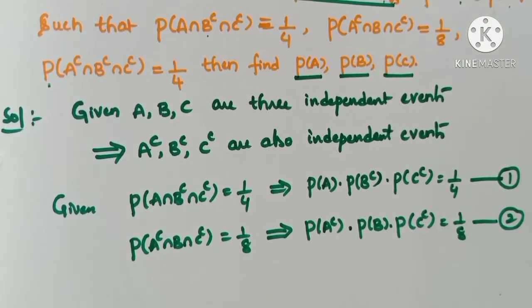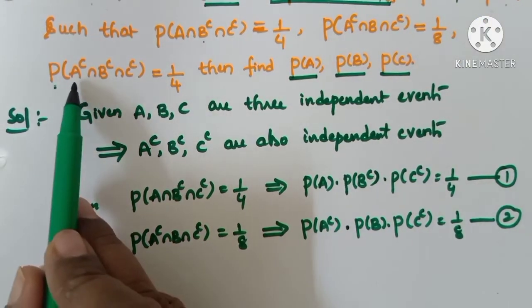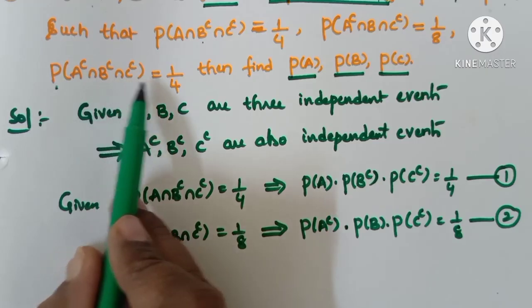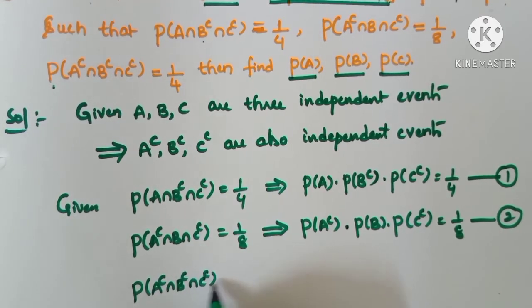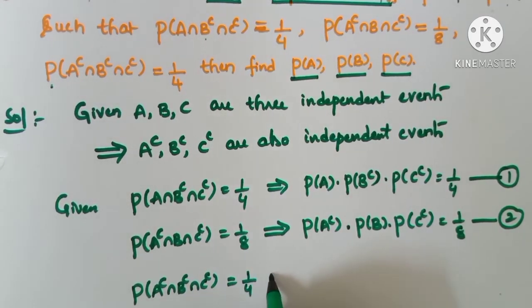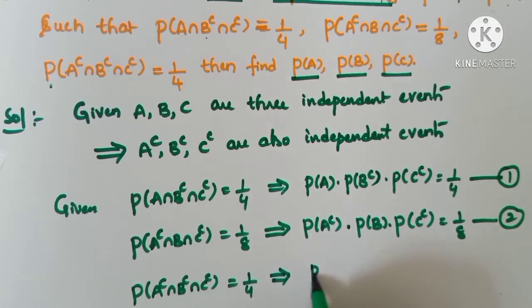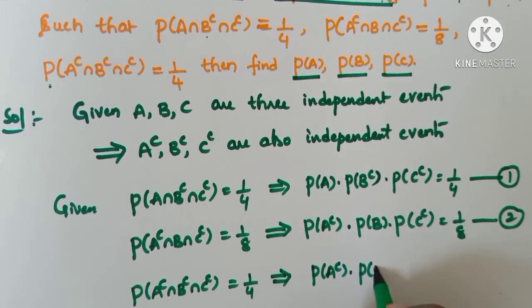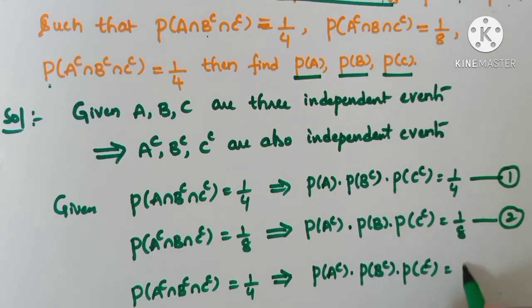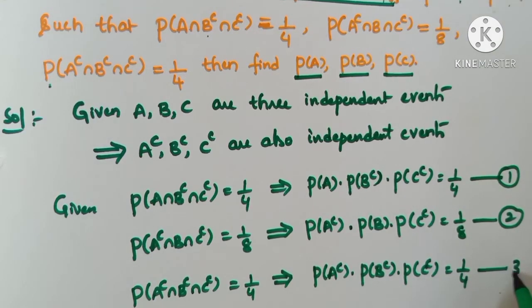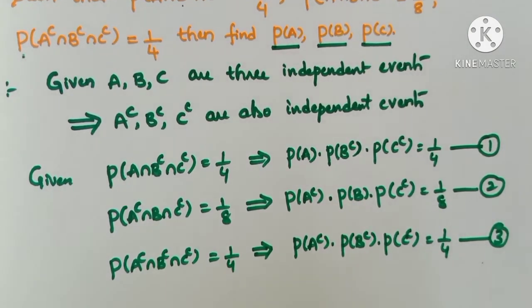Now the third clue: P(A' ∩ B' ∩ C') = 1/4. So P(A')·P(B')·P(C') = 1/4. This is equation 3. Using independence, the intersections factor into products. Our target is to find P(A), P(B), and P(C).